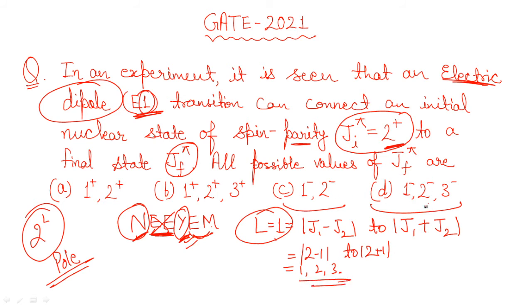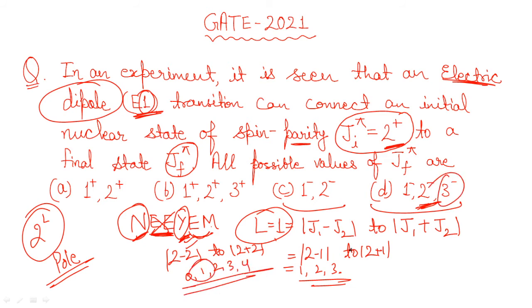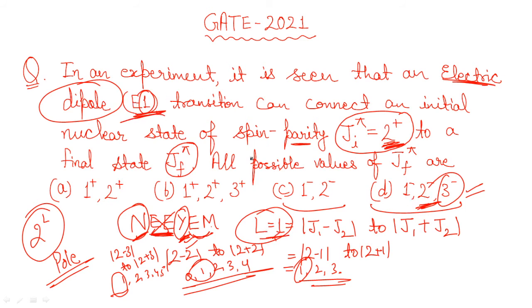For J_F = 2, L ranges from 2−2 to 2+2, giving L = 0, 1, 2, 3, 4 — yes, L=1 is present. For J_F = 3, L ranges from 2−3 to 2+3, giving L = 1, 2, 3, 4, 5 — L=1 is also present here. Since J_F values of 1, 2, and 3 all satisfy the condition, option D is correct. That's how by using the trick you can quickly get the answer.